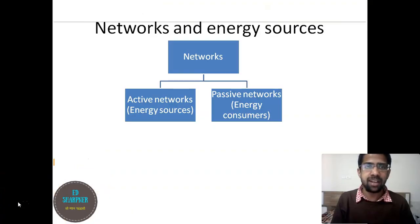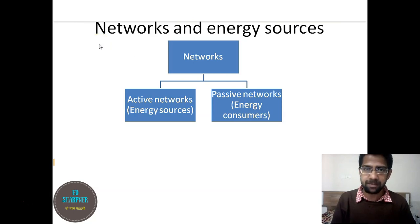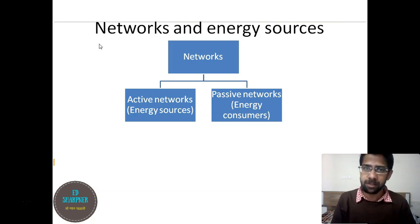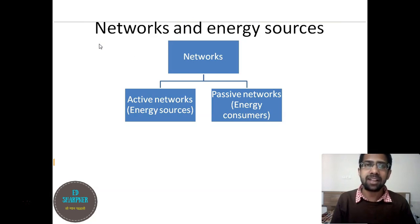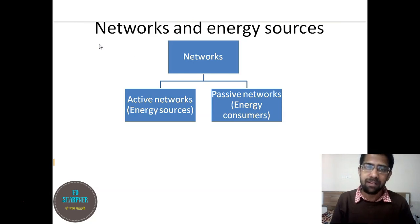The first topic is networks and energy sources. This topic will build the mathematical concepts to understand the topics coming next. To understand what is a network, we must first go into what are active networks and passive networks. The active network is completely made up of active elements — active elements are the energy providers or energy givers, such as a voltage source or a current source.